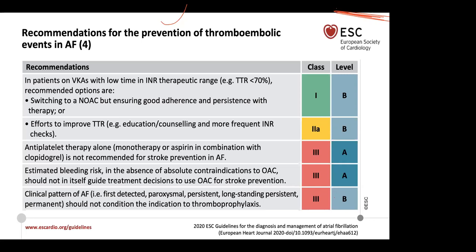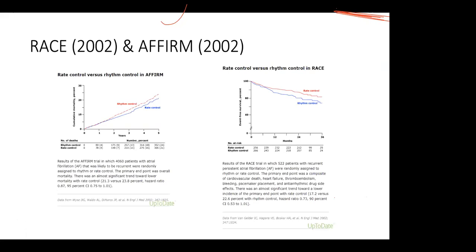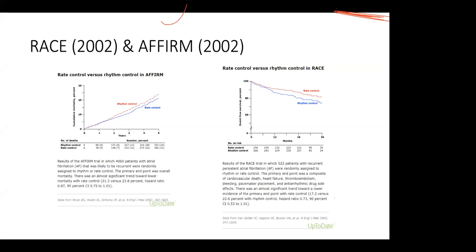The big question is rate versus rhythm control. The two main defining trials — the RACE trial and the AFFIRM trial, both published in the NEJM in 2002 — showed that rate control is non-inferior to a rhythm control strategy in terms of outcomes and survivability for individuals with atrial fibrillation. As such, rate control becomes a backbone of all atrial fibrillation treatment; all patients will get some form of rate control. Rate control is preferred in those who are asymptomatic, intolerant to rhythm control strategies, have failed drug therapy or ablation, or are very elderly.